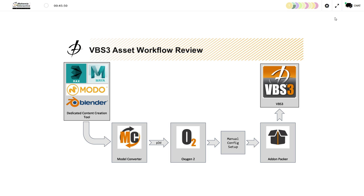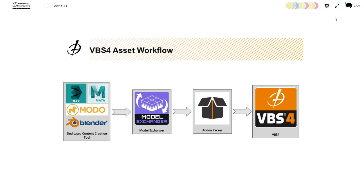This causes a slight disconnect between the source that is VBS ready — the P3D file — and the source embedded in the dedicated tools used to create the model. Once the mesh is made suitable through Oxygen 2, through a lot of manual labor, you pass it to the manual config setup, deciding how it should sound, how fast it goes, what ammo it carries. Once these two pieces are assembled, you merge them through add-on packer and send them to VBS3. For VBS4, we have simplified this process — you still have your source on the left side created in an industry standard tool, send it to Model Exchanger, which handles all the content setup, then through add-on packer to VBS4.